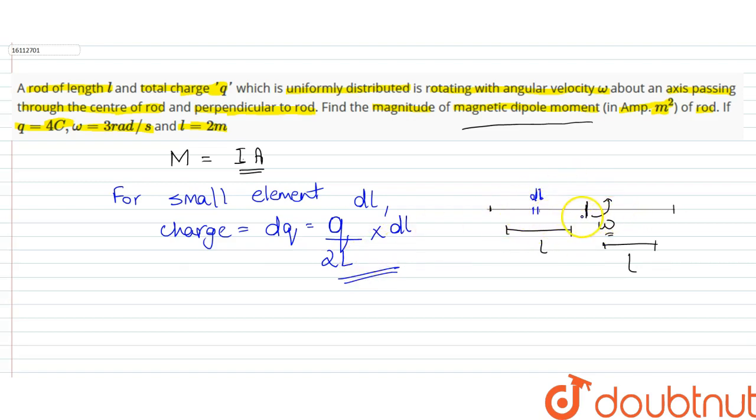So if we see that we have this charge in this small element dx, we have this distance from the center. We take this as x. We call it dx. So for a small element dx, the charge is Q/2L times dx. This is our x distance from the center of the rod.